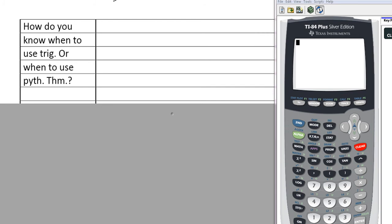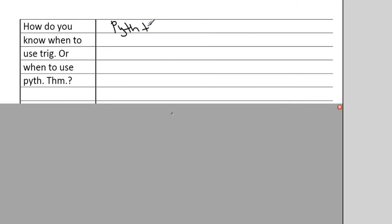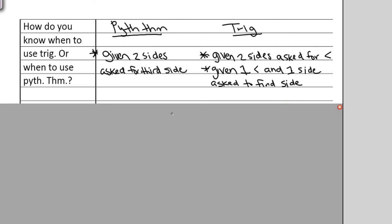So before, when we did Pythagorean Theorem, you had a right triangle and you were given two sides looking for the third side. So how do you know when to use trig or when to use Pythagorean Theorem? With Pythagorean Theorem, you're going to be given two sides and you're going to be asked for the third side. With trig, you're going to be given two sides and asked for an angle measure, or you're going to be given an angle and one side asked to find the second side.